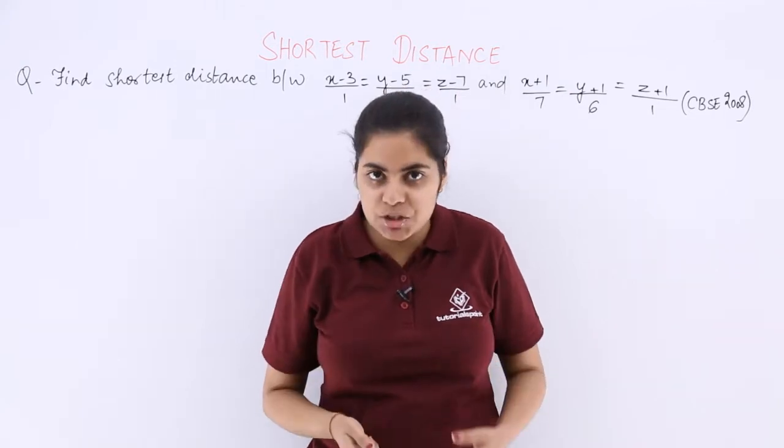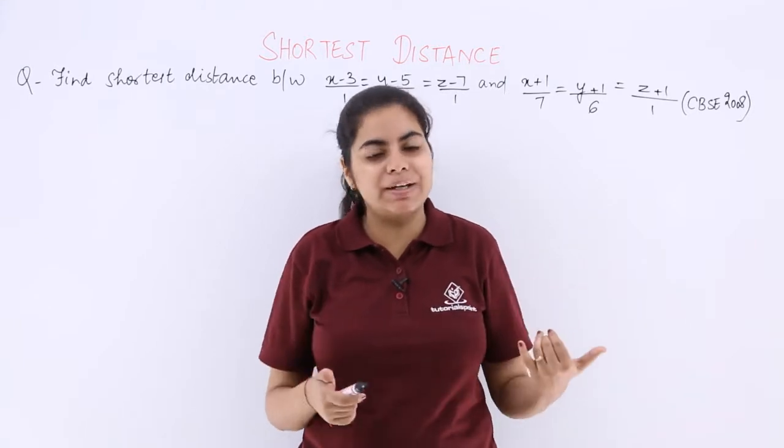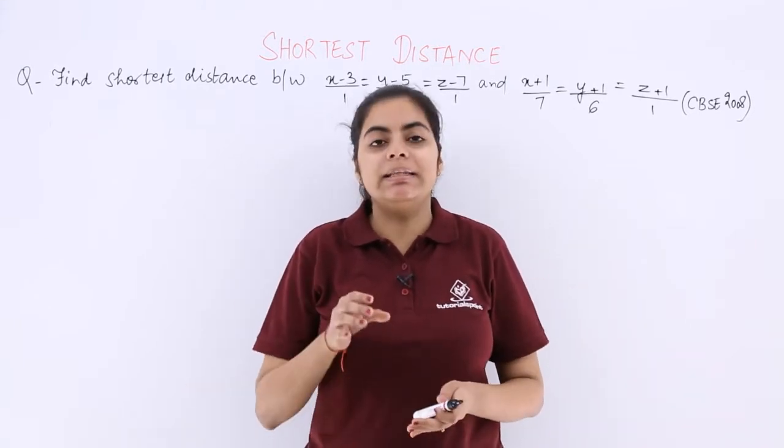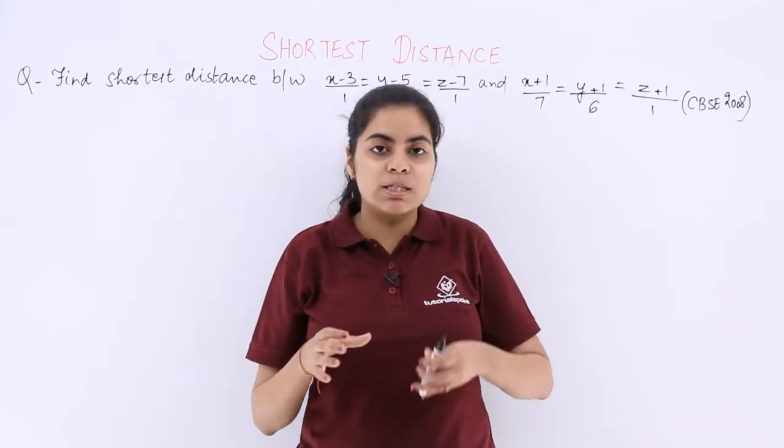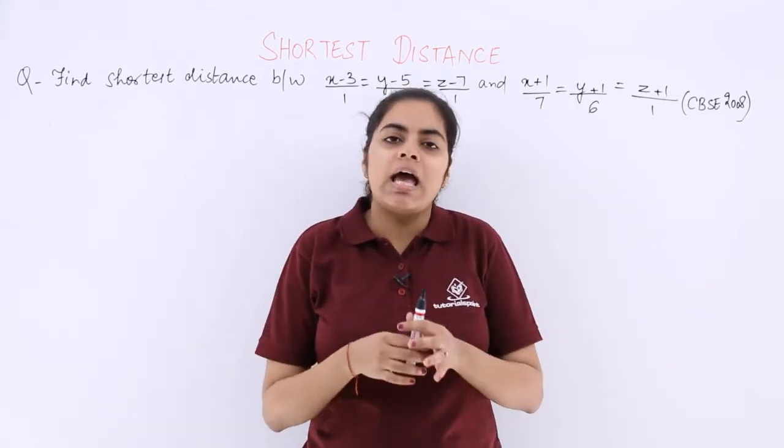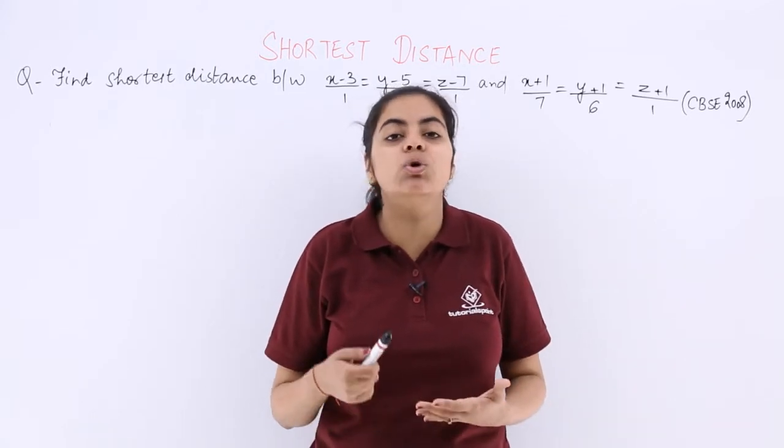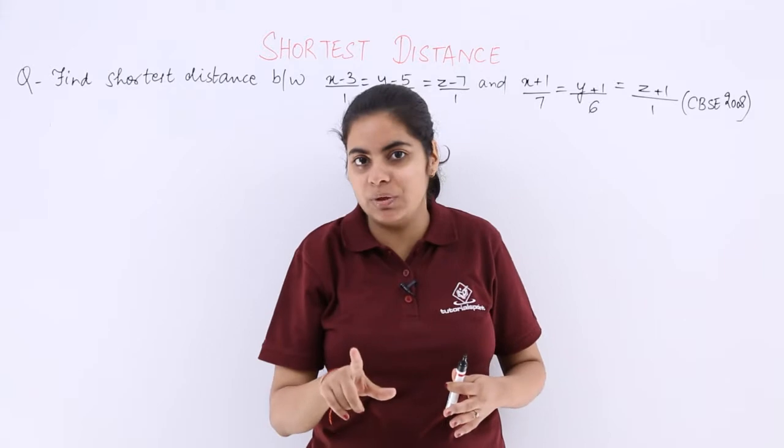Because the Cartesian form can also be first converted to vector form, and then a formula of vector form can be used to solve it. That is easier than using the Cartesian form's formula because it is very lengthy, and you know the only answer has to be shown. You do not have to show that you solved it using Cartesian form only. It is not mentioned anywhere in the question paper.